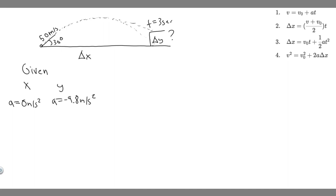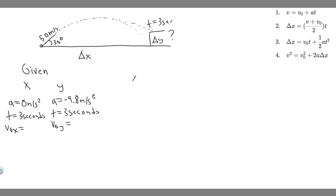We also know the time for both directions is going to be 3 seconds — the time it takes to get to the end of the interval. We also know the initial velocity in both x and y. They don't tell us explicitly, but they give us the vector — the direction and the magnitude — to find both values.